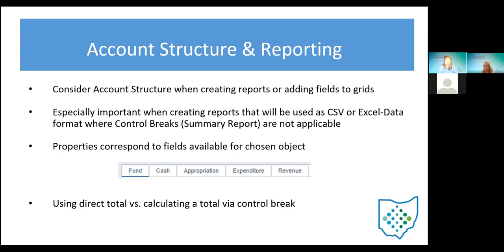When pulling fields from accounts onto reports like a budget summary, there are amounts held within those account pages calculated based on transactions — like here's how much was expended to this budget account. I have some other functionality when using a PDF report to add control breaks and have the report mechanism give you subtotals, but when you're doing CSV or Excel data, those don't have subtotals because that's just pulling raw data to a spreadsheet. So you have to think: which field am I trying to pull from the software to get that report?